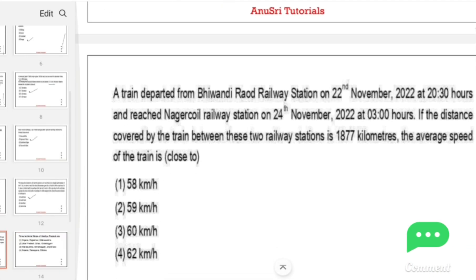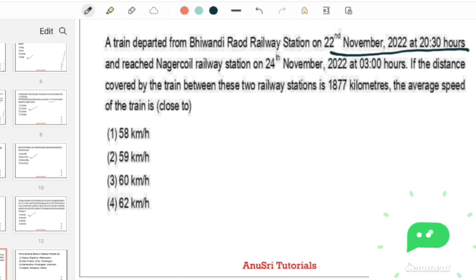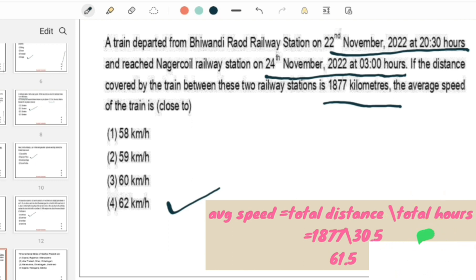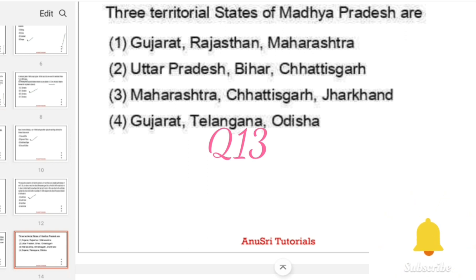A train departed from Bhavnagar Road railway station on 22nd November 2022 at 20:30 hours and reached Nagercoil railway station on 24th November 2022 at 3:00 hours. If the distance covered by the train between these two railway stations is 1877 kilometers, then we can find out the average speed of the train. It is 62 kilometers per hour. Total distance covered divided by total hours gives the answer 62 kilometers per hour.